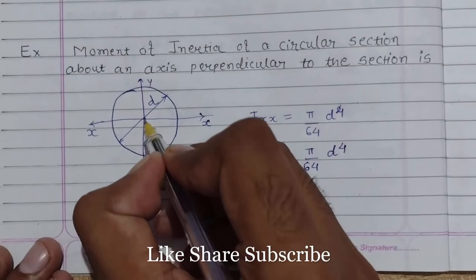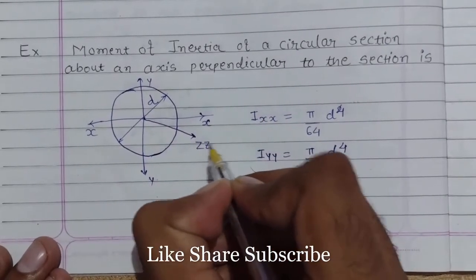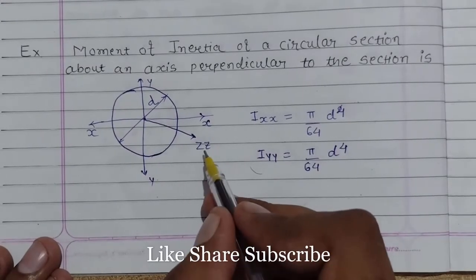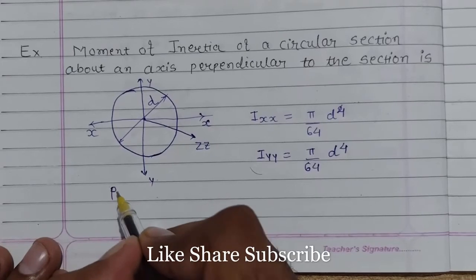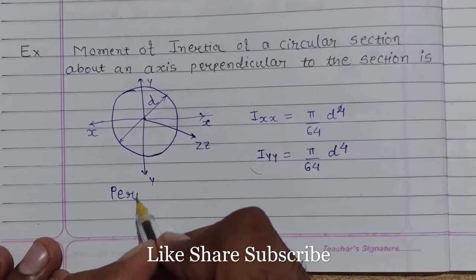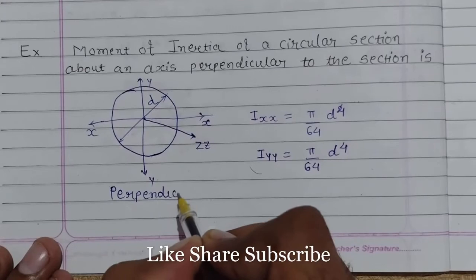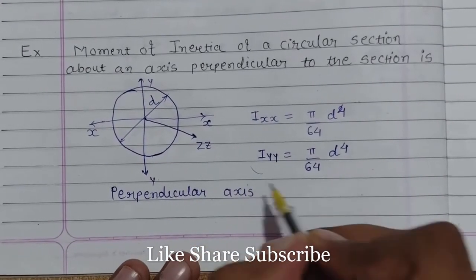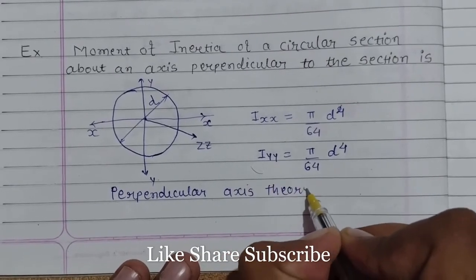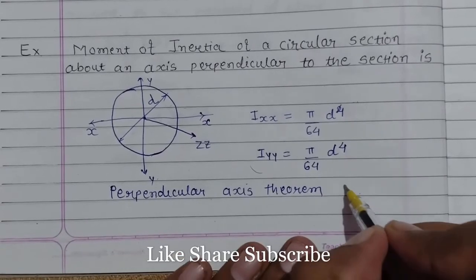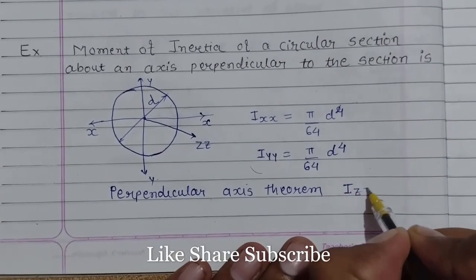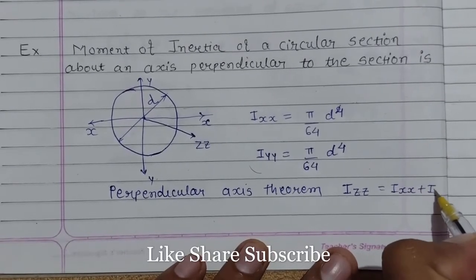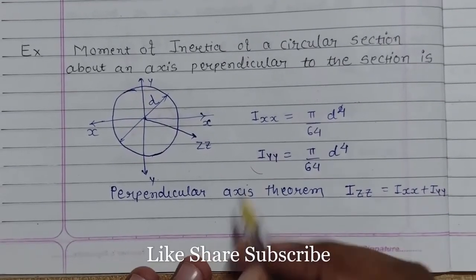So this is our third direction, Izz. For finding the moment of inertia about Izz we use the perpendicular axis theorem. According to the perpendicular axis theorem, Izz is equal to summation of Ixx plus Iyy.